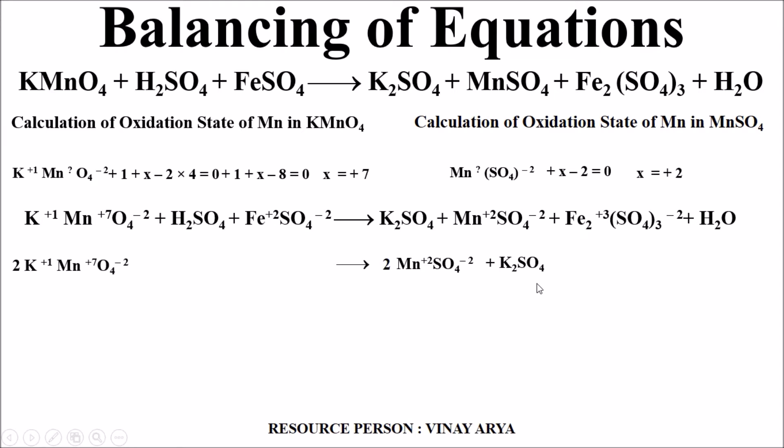As soon as we take potassium sulfate, what happens is manganese—there are 2 over here. So it becomes 2 for potassium and similarly 2 for Mn.